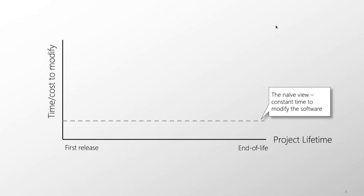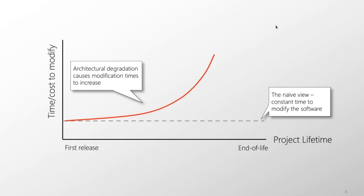A naive view is that the cost to modify is a flat line — it shouldn't take any longer to add a feature near end of life than at the first release. But experienced engineers will tell you the reality is far more like a rising red curve. As a project goes on it takes longer and longer to add each unit feature. We call this architectural degradation, or software rot.